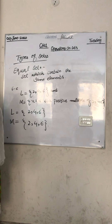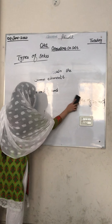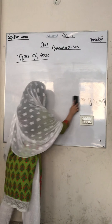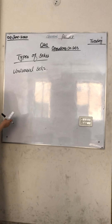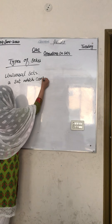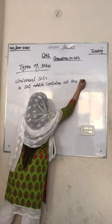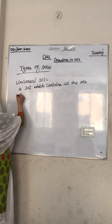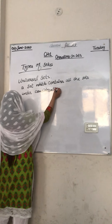Our next type is universal set. What is a universal set? A universal set is a set which contains all the sets under consideration.